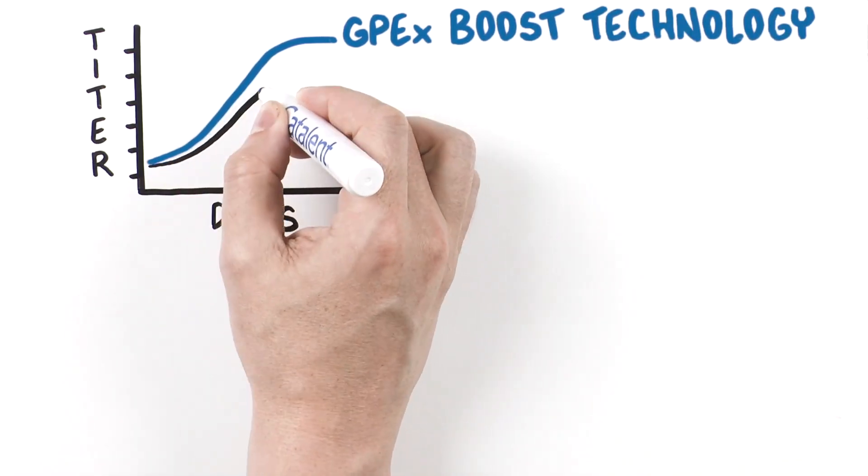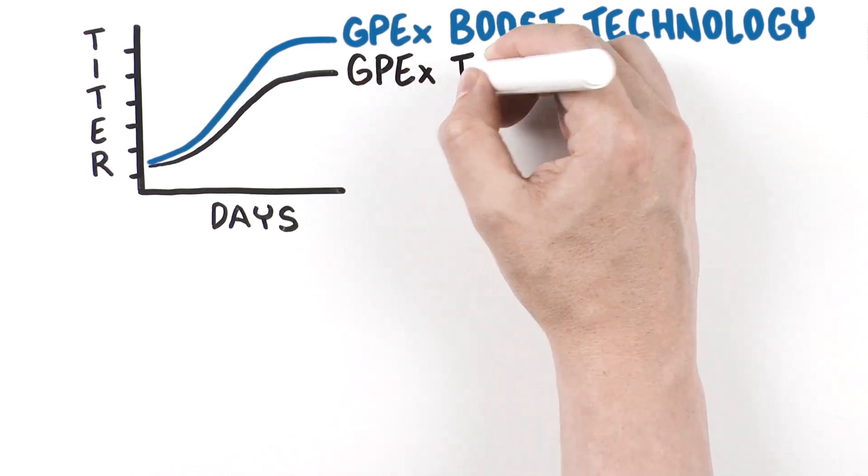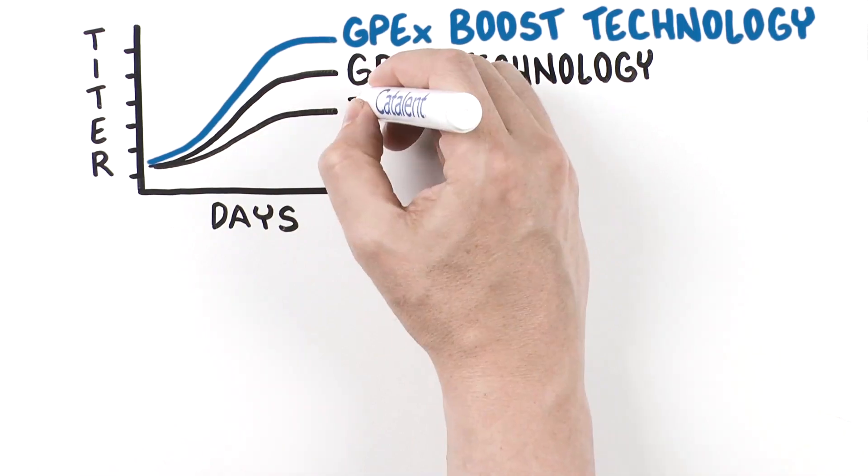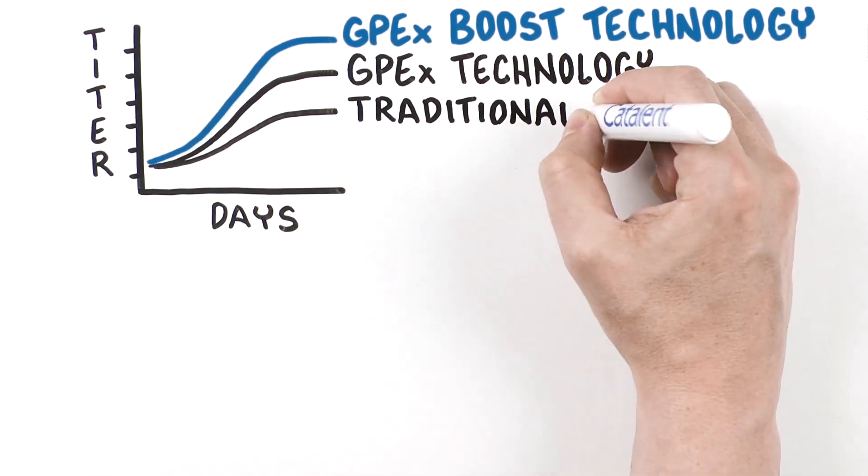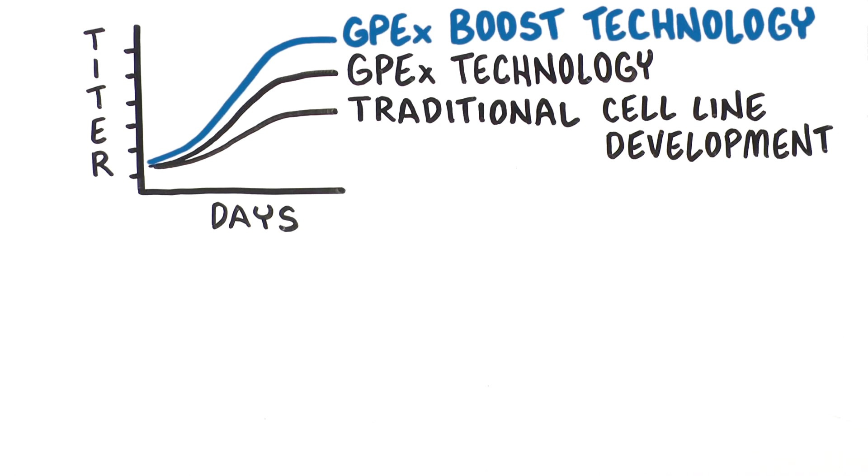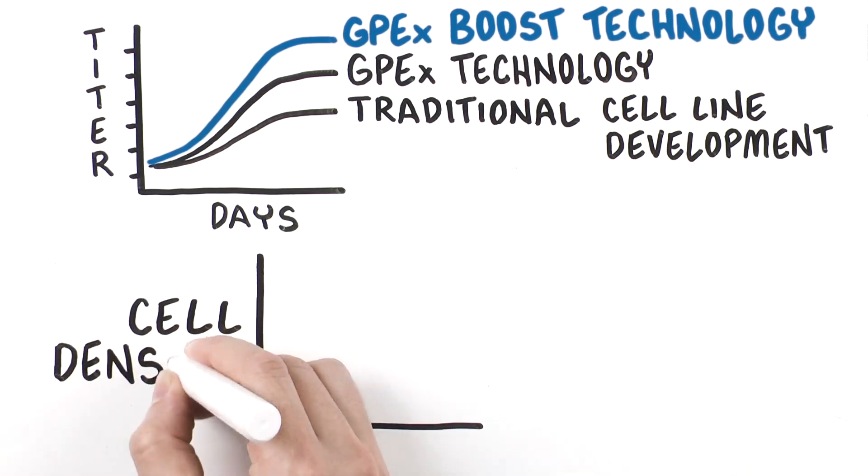By combining these two proven technologies in a novel way, unique synergies were achieved resulting in titers up to 10 grams per liter, with four-fold higher titers observed in difficult-to-express proteins. By incorporating the GS knockout,